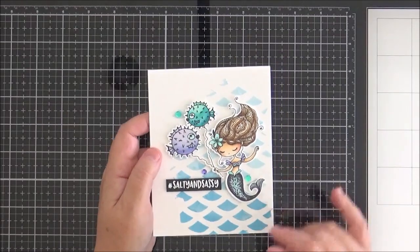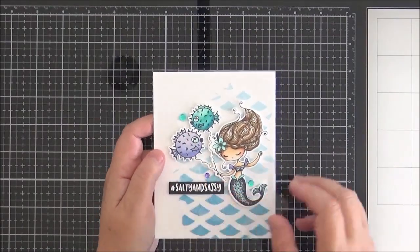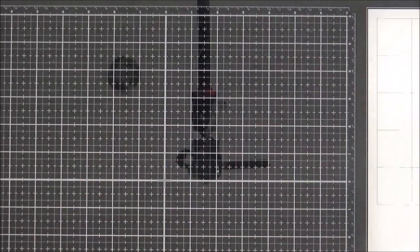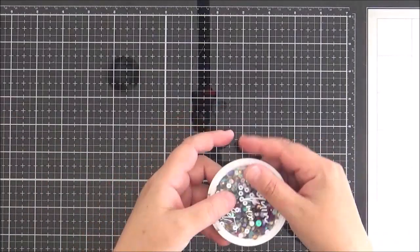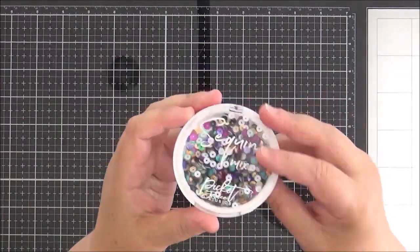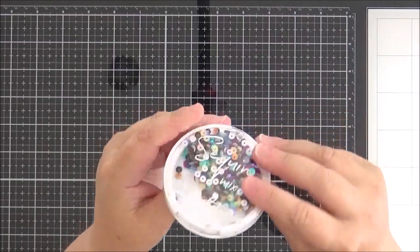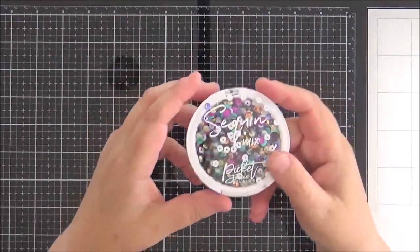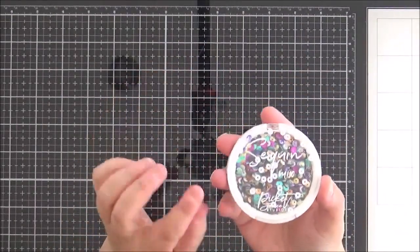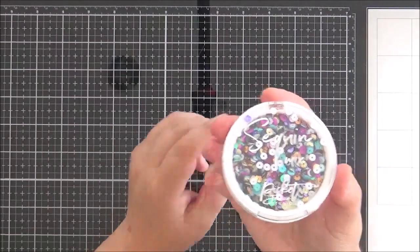I hadn't had a chance to use it, so I really wanted to get it on a card this month. That's the card that I created. I added a few little sequins too, and that brings me onto this sequin mix. This one here is called City Lights.